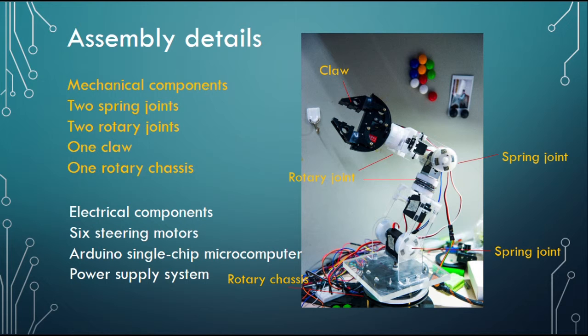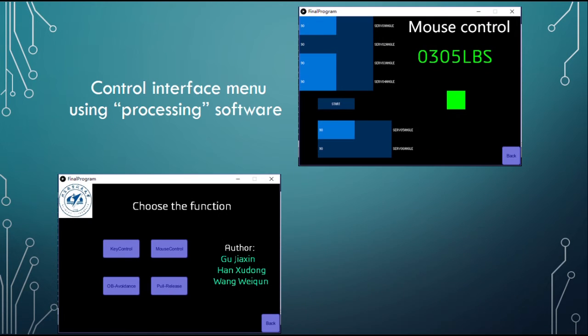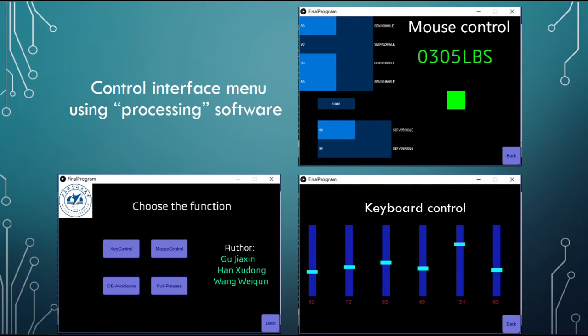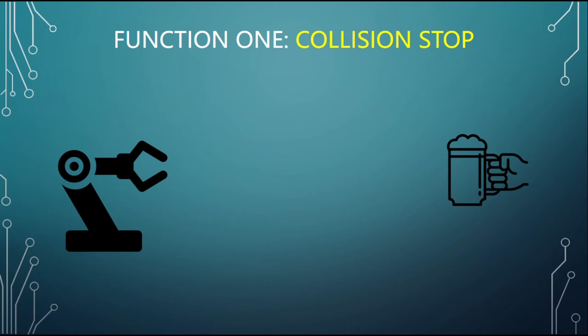The Arduino microcomputer will send PWM signals to control the motors. Software processing is used to build a control interface menu. We can use a keyboard or mouse to control the manipulator.